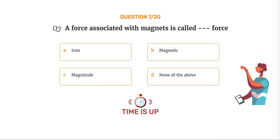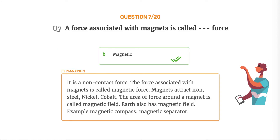The correct answer is Option B: Magnetic. It is a non-contact force. The force associated with magnets is called magnetic force. Magnets attract iron, steel, nickel, cobalt. The area of force around a magnet is called magnetic field. Earth also has a magnetic field. Example: magnetic compass, magnetic separator.